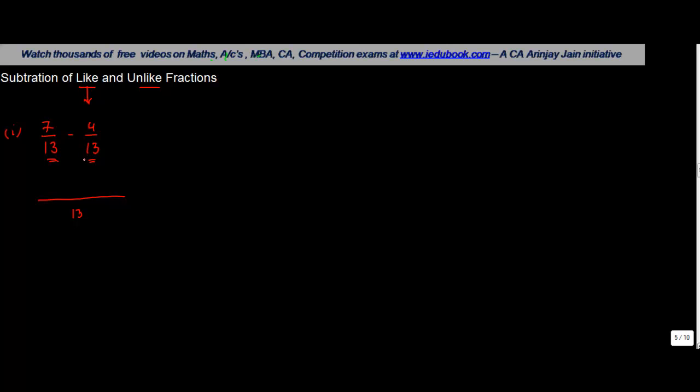When you were doing the addition, what you did was that the numerator used to be the sum of these two numerators. Whereas when you find out the difference of two, what you have to do is that the numerator is basically equal to the difference of two numerators. And the denominator is the common denominator.